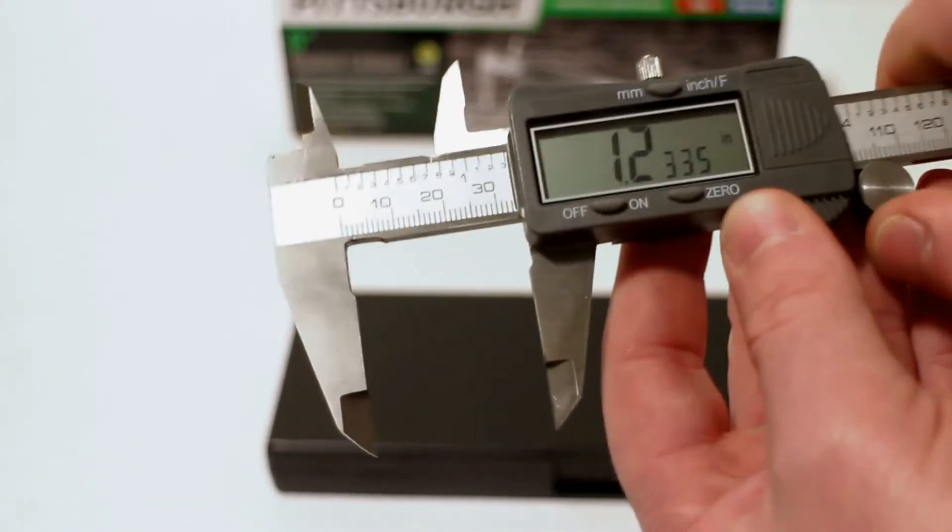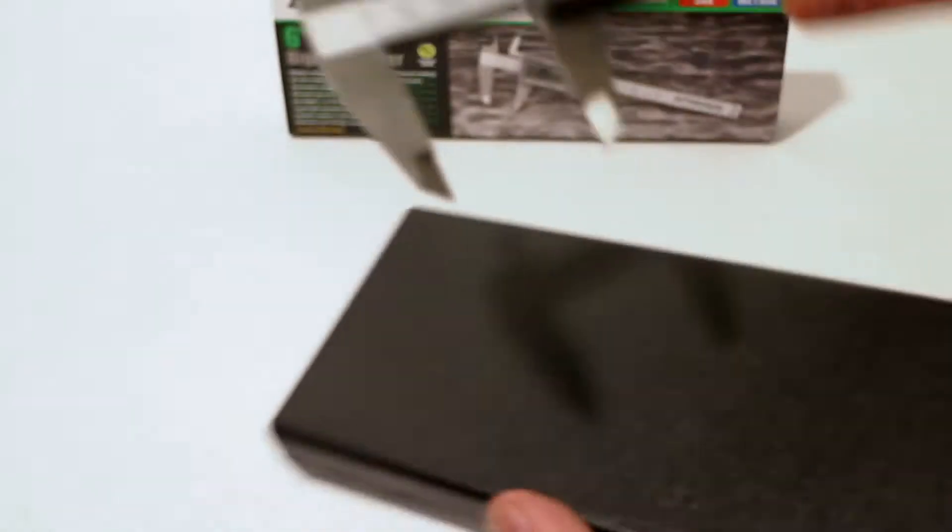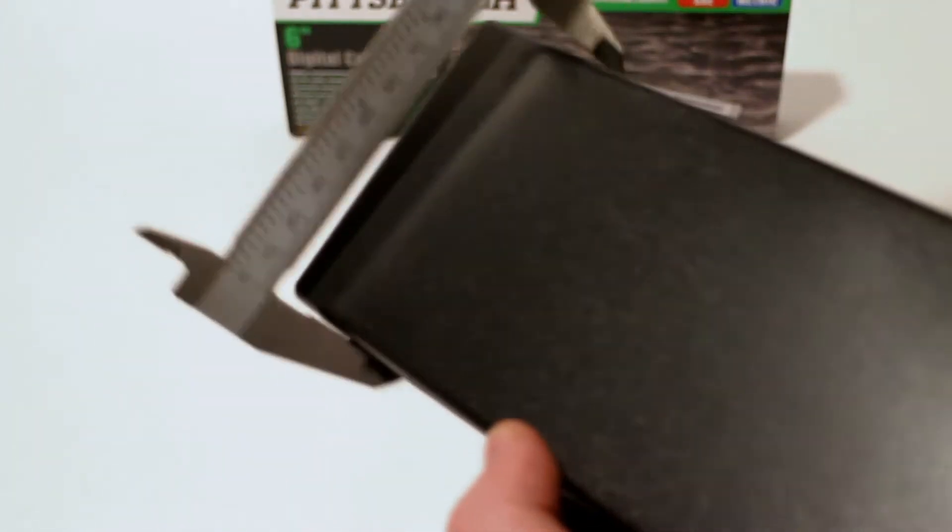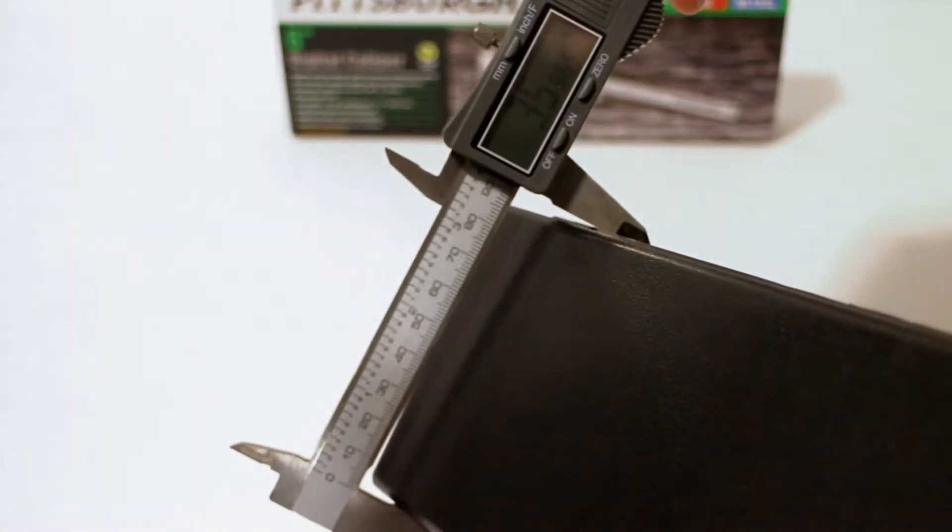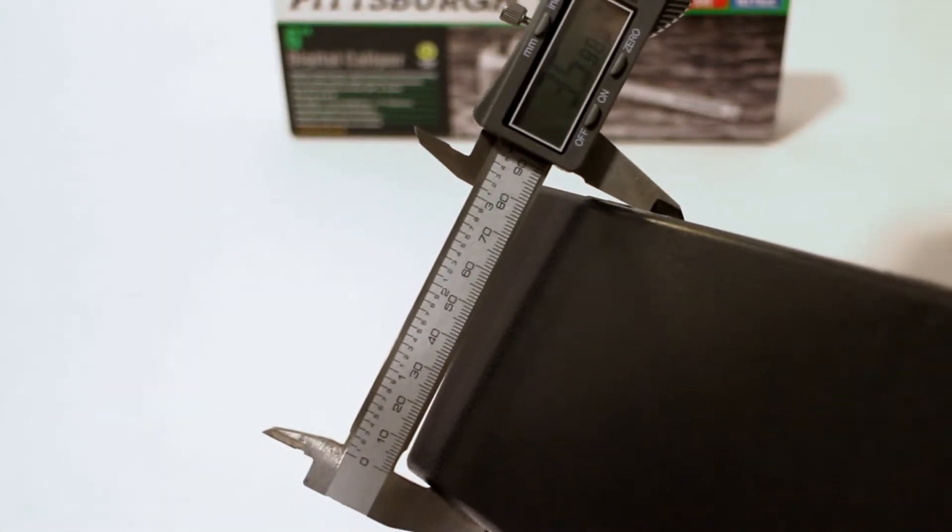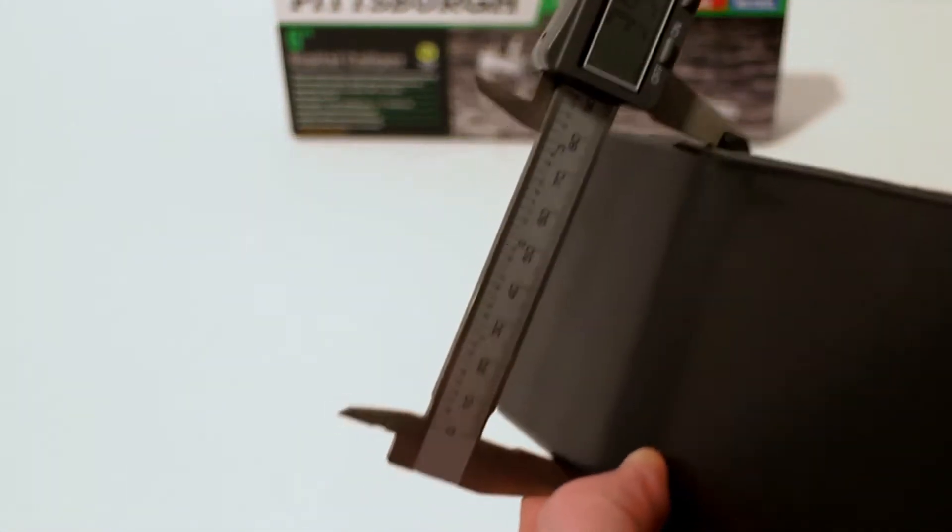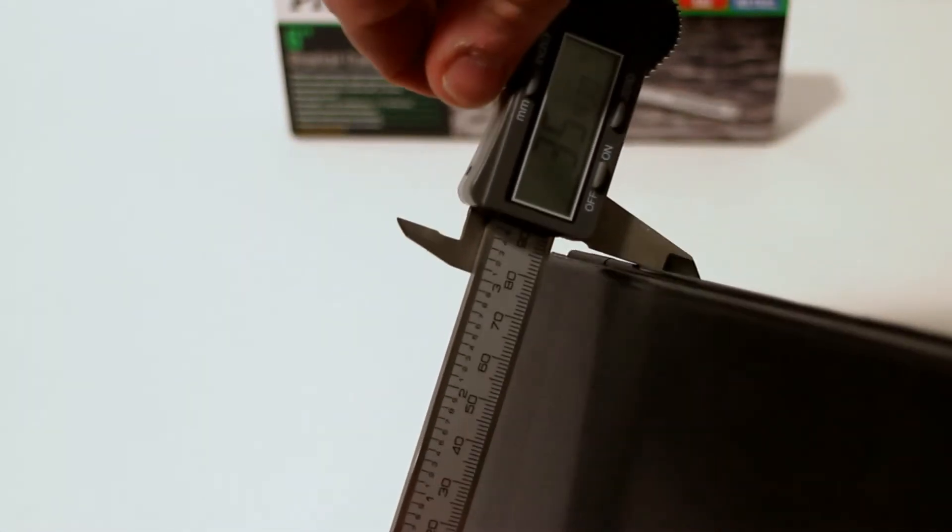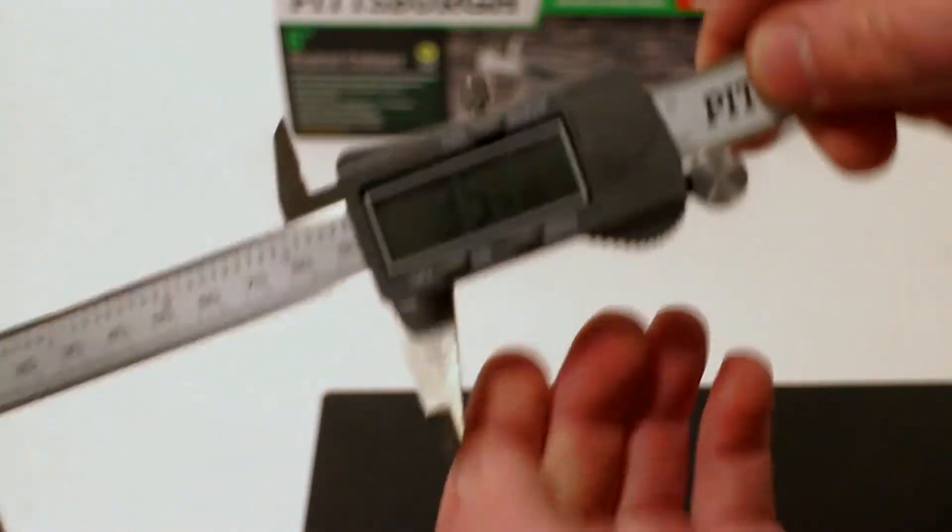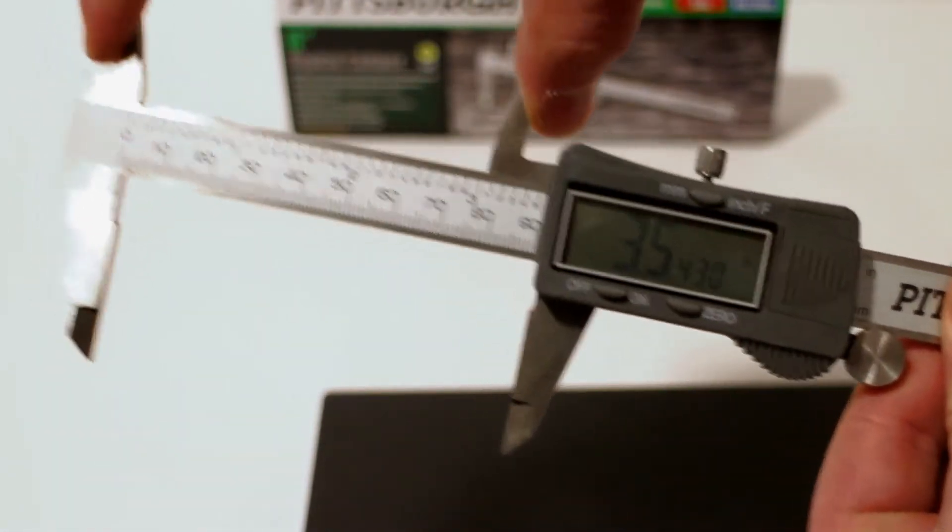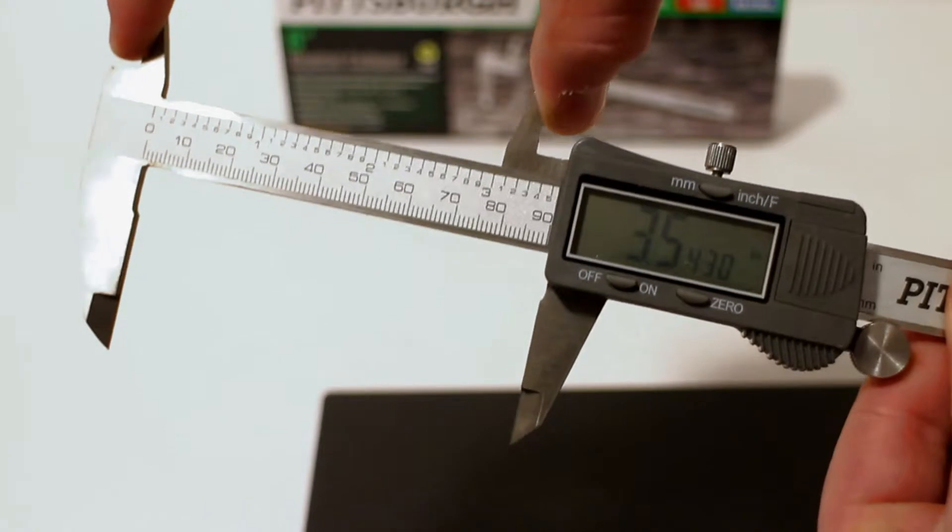Let's say you wanted to measure something like the width of this box that it comes with. We're going to go ahead and do that, which we can see is about 35 millimeters. To lock that in place, we've got this little knob on the top that you can tighten up, and that's actually going to lock the caliper in place where even if you try to squeeze it closed, it's going to stay.